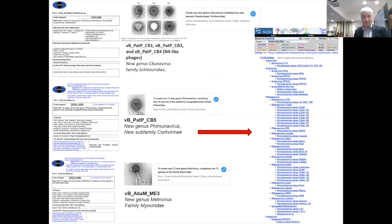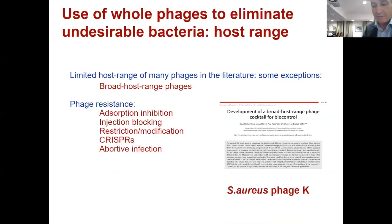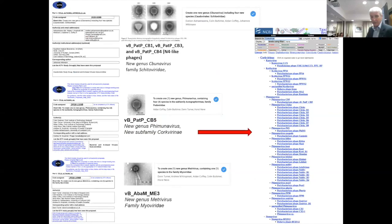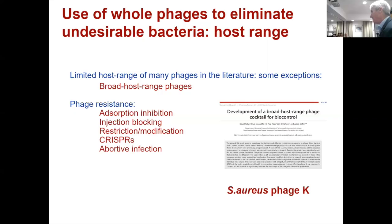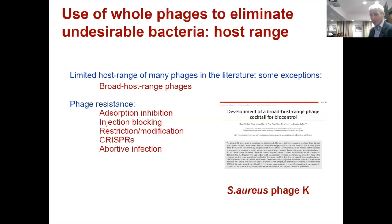You're allowed to do this with subfamilies. That's the ICTV registration of these new genera. When you talk about whole phages to eliminate undesirable bacteria, you have one big challenge: the major challenge is bacteriophage host range. By and large, the host range is usually quite narrow. You have to be very lucky to find a phage which covers an entire species or genus.